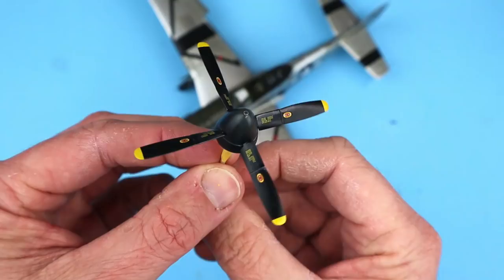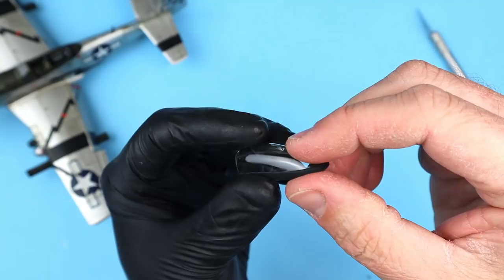I masked and sprayed the prop tips with Tamiya flat yellow applying a base coat of flat white first to make sure that the yellow covered well.